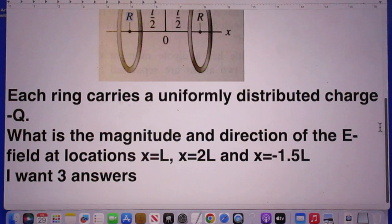What is the magnitude and direction of the E-field at locations X equals L, X equals 2L, and X equals minus 1.5L? So when I say here I want three answers, I really mean six answers because I want both the magnitude and the direction.